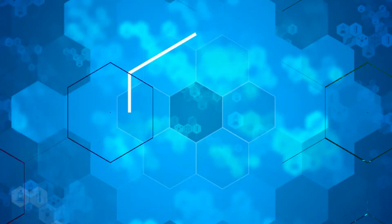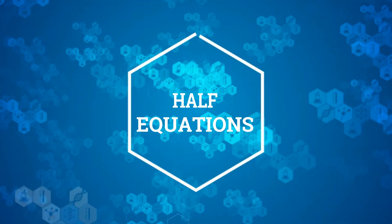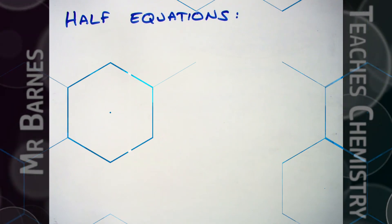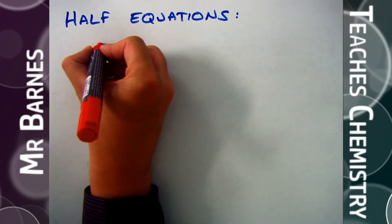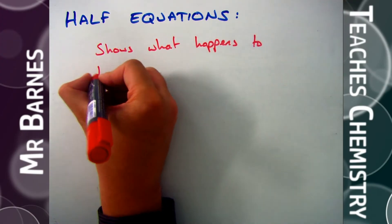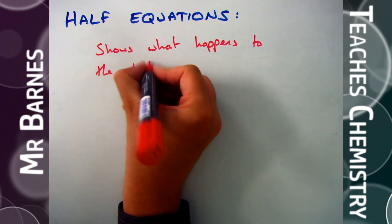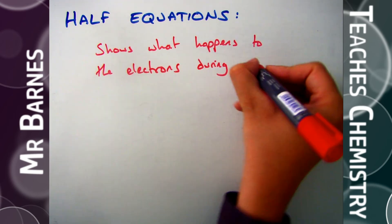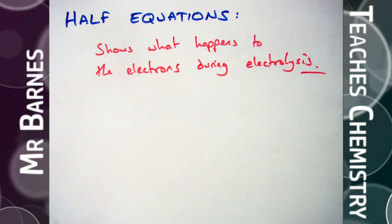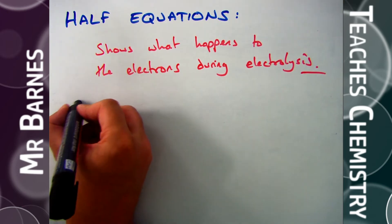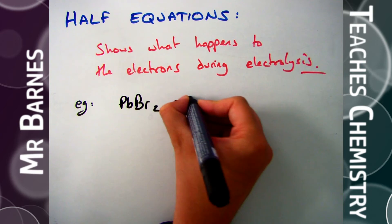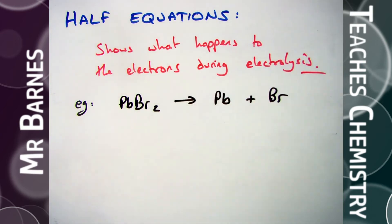Hi guys, welcome to this video looking at how half equations can be used to show what happens to ions during electrolysis. A half equation shows you what happens to the electrons during electrolysis and how you get back from the ions to the actual elements. The perfect way to explain what's going on is to use an example, so we're going to have a look at lead bromide — it's one we've looked at in the past and one you need to know for the exam.